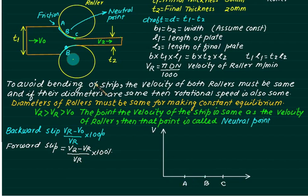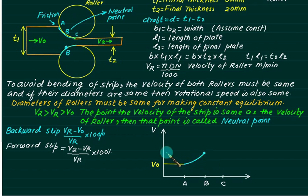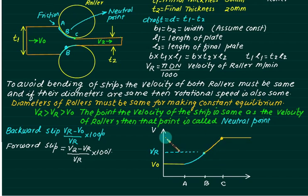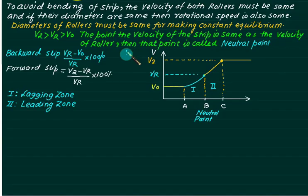Comparing points A, B, C with the velocity graph: up to A, velocity is constant at V0. At B (neutral point), velocity equals Vr. Velocity increases from V0 to Vr between A and B, then continues increasing from B to C, and remains constant thereafter at V2. The entire deformation zone is divided into two parts: zone 1 from A to B is called the lagging zone, and zone 2 from B to C is called the leading zone.